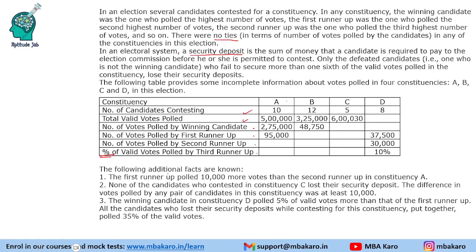Some additional facts are given. The first runner-up polled 10,000 more votes than the second runner-up in constituency A. This will help us find that value.